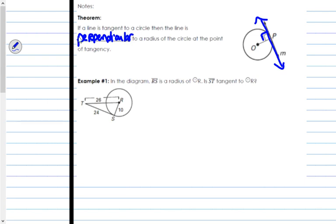So, example 1. In the diagram, RS is a radius of circle R. Is ST tangent to circle R? They're asking, is ST tangent to circle R? If it was tangent, that means it's perpendicular. Well, if it's perpendicular, it forms a 90 degree angle, which means that's a right triangle. Well, we can check to see if it's a right triangle.